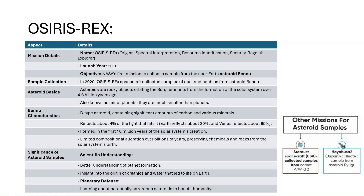OSIRIS-REx — Origins, Spectral Interpretation, Resource Identification, Security, Regolith Explorer — has returned to Earth. It was NASA's first mission to collect a sample from the near-Earth asteroid Bennu. Other asteroid sample missions include Stardust by the USA and Hayabusa-2 by Japan.